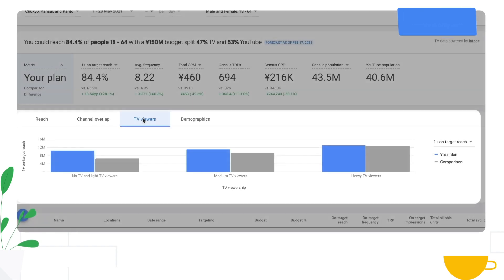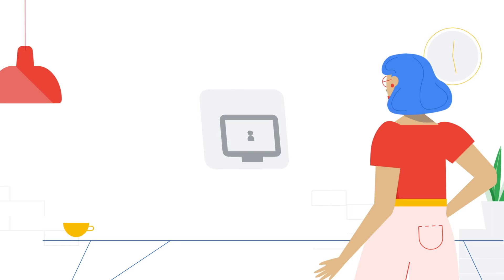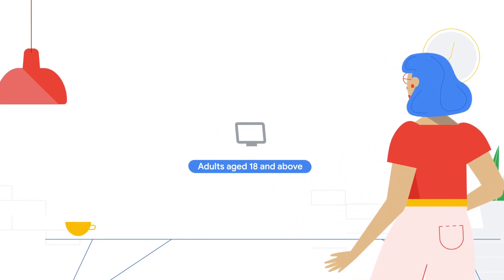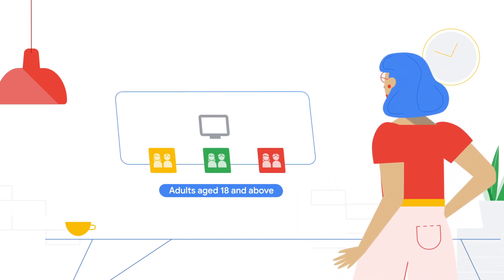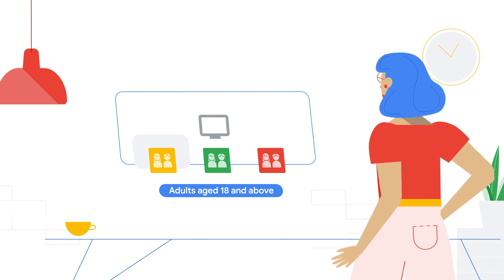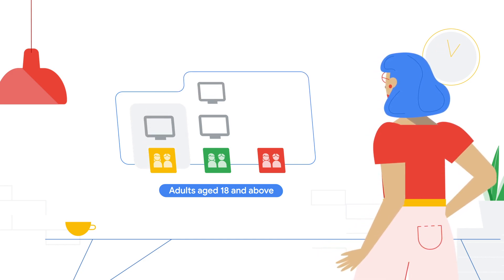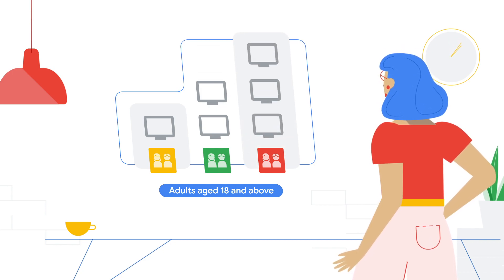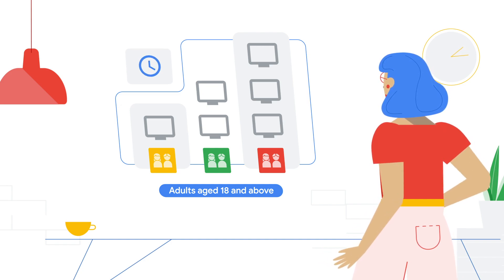Then there's TV viewership. In some countries you'll have the ability to see the breakdown by TV viewership. This is determined by taking TV viewership for all adults age 18 and above and breaking it down into three equally sized segments: people who are non and light TV viewers, people who are medium TV viewers, and people who are heavy TV viewers, based on the amount of television they've watched in minutes or hours.